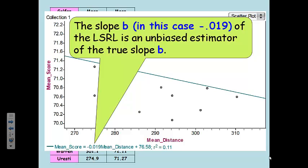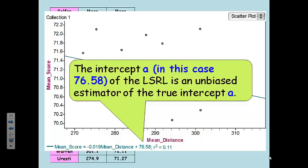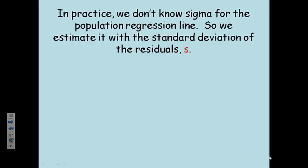The slope, in this case, negative 0.019, is an unbiased estimator of the true slope. We've heard that terminology, we know what unbiased estimators mean, and the intercept is also an unbiased estimator of the true intercept. So, we can use both the slope and the intercept to estimate what the true slope and what the true intercept are. Now, in practice, we don't usually know sigma for the population regression line, so we estimate it. And then we also have to estimate the spread of the sampling distribution.